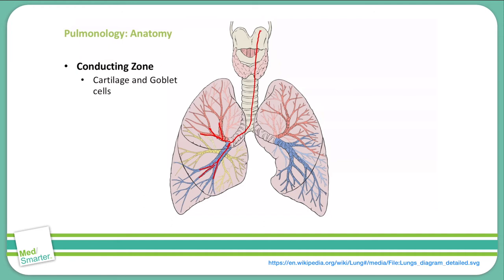After that, we have pseudostratified ciliated columnar cells that will primarily make up the epithelium of the bronchus, and they extend to the beginning of the terminal bronchioles. At that point, they will transition into cuboidal cells.